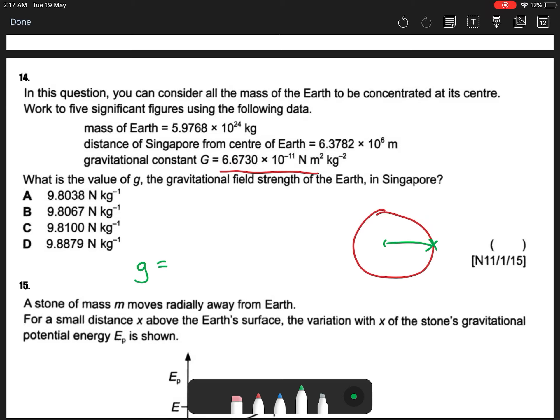So my g function is GM divided by R squared. So this is my R. So if you can add it in, you can use how much? 6.673 times 10 to the negative 11.